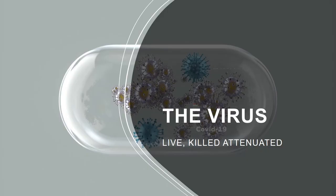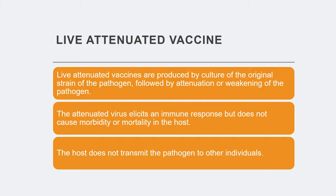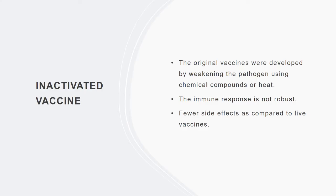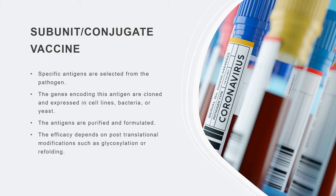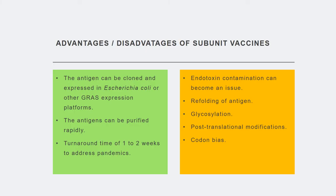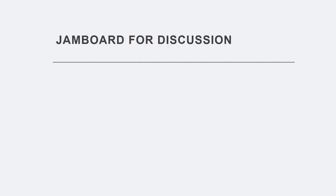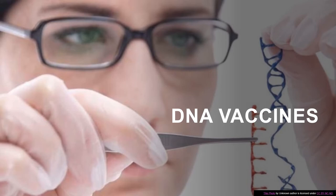Among the different kinds of vaccines, we will be looking into the live, the killed, and the attenuated vaccine. I will be discussing live attenuated vaccines, inactivated and recombinant antigen-based vaccines. We will also learn about subunit or conjugate vaccines and their design and development. In each case, we will look at the advantages and disadvantages and have a Jamboard discussion during the lecture.